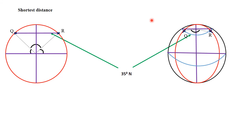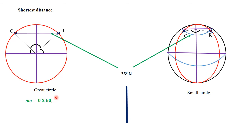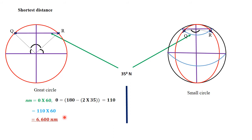Points Q and R lie along 35 degrees north. For the first case, going through the north pole via a great circle, we use the formula θ times 60. There is an angle of 35 degrees on each side giving the latitude. The angle difference — the angle between the two meridians passing through the north pole — is 180 minus two times 35, which equals 110 degrees.